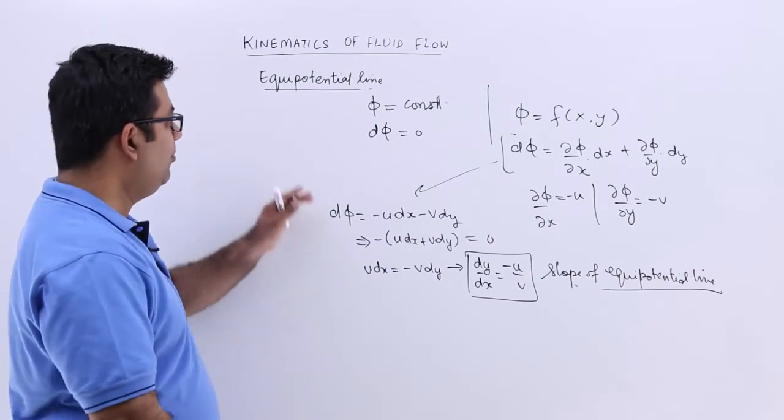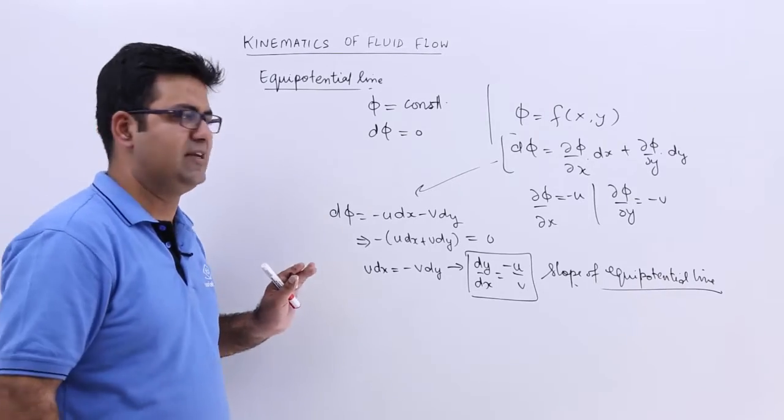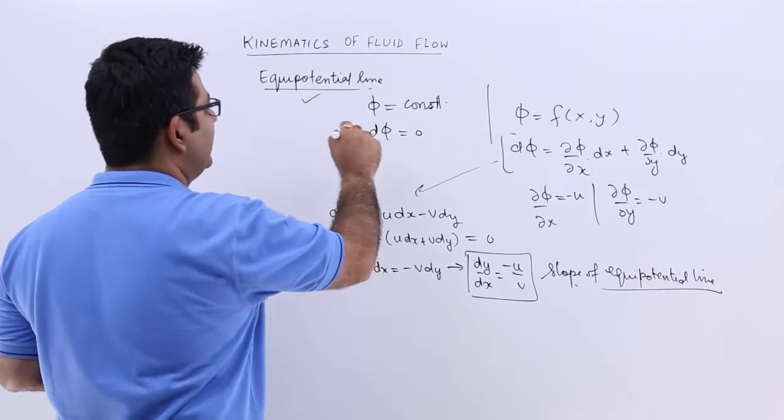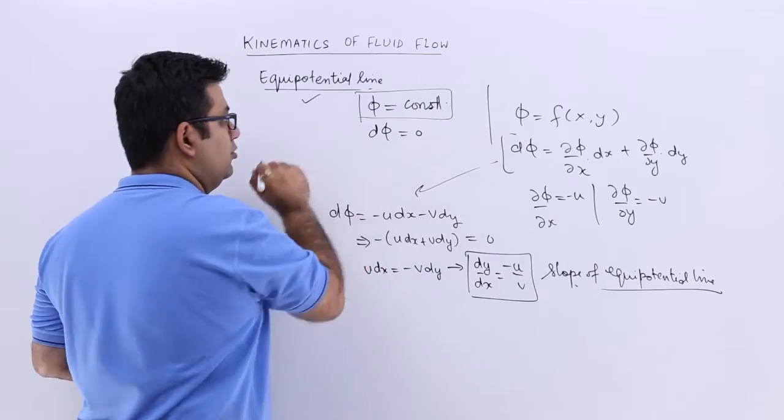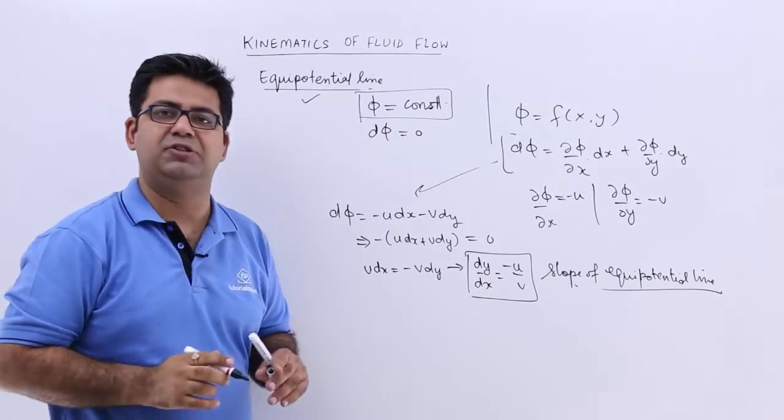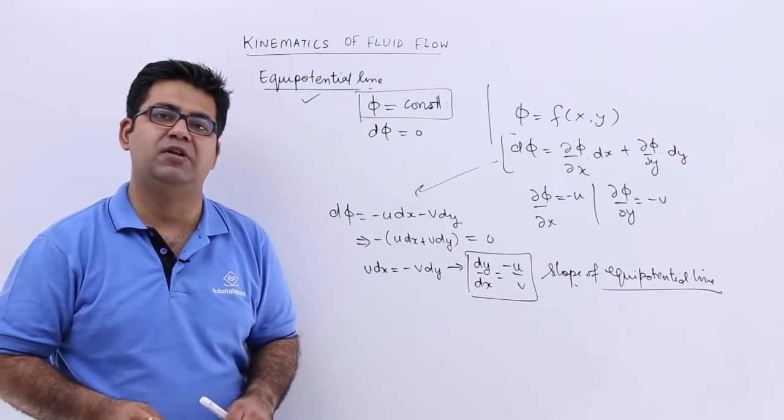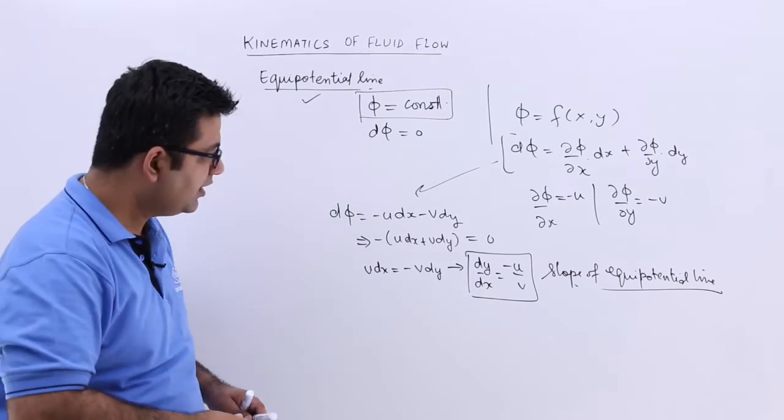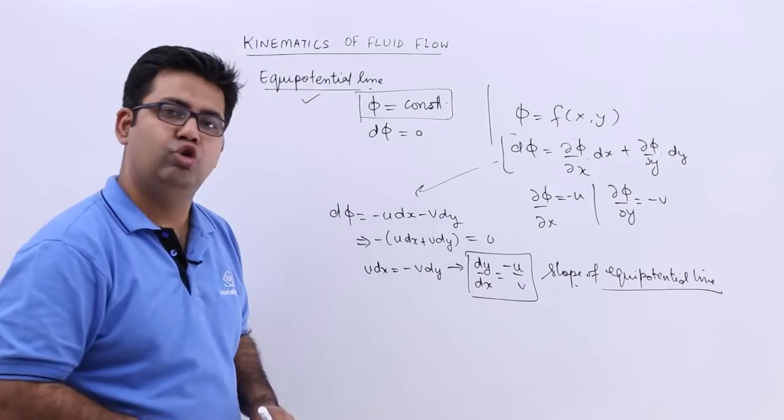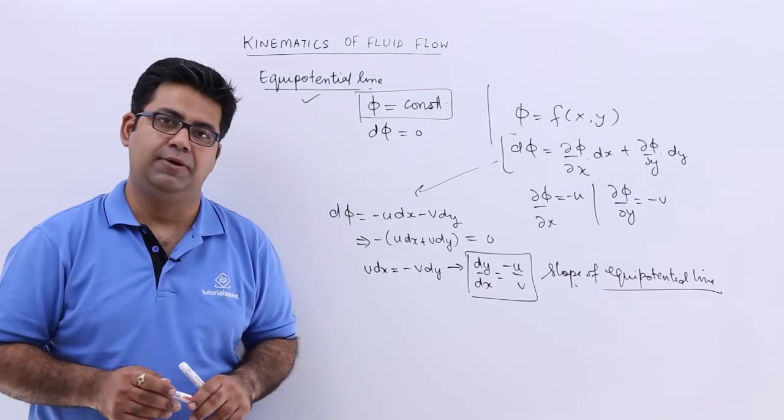So I hope you understood a very simple concept on equipotential line. That is, it is a line along which the velocity potential function is constant. Or you can say the change in the velocity potential function is 0. And this becomes the slope of the equipotential line.